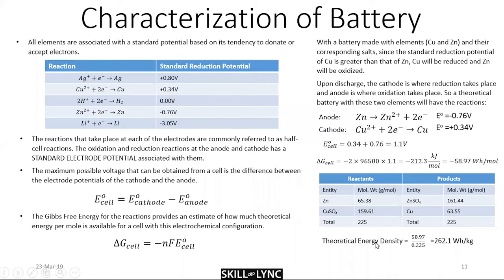I've shown a demonstration of how you can calculate the theoretical energy density using a Daniel cell, one of the primitive cells created. There are two half-reactions: it consists of zinc and zinc sulfate, copper and copper sulfate, with hydrogen sulfate as the electrolyte connecting both half-cells. The cell potential is the difference between each half-potential — that's 1.1 volts — and when you do the math, you get about 59 watt-hours per mole.